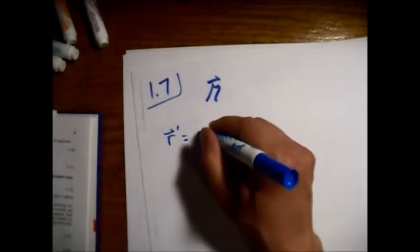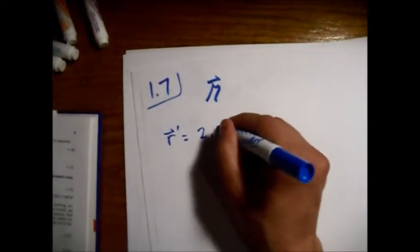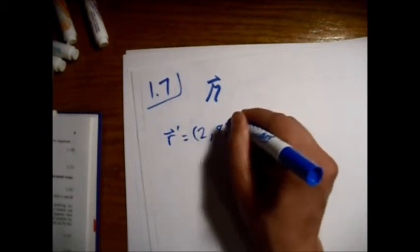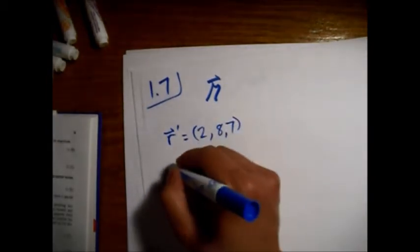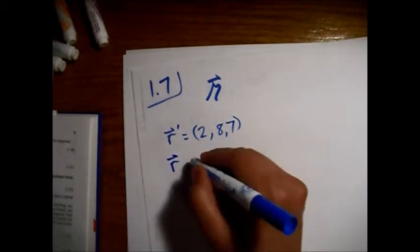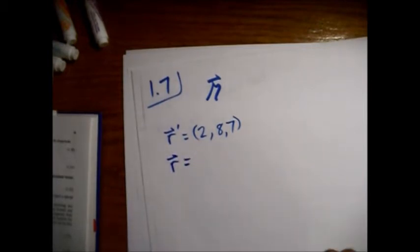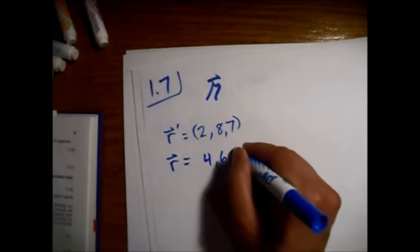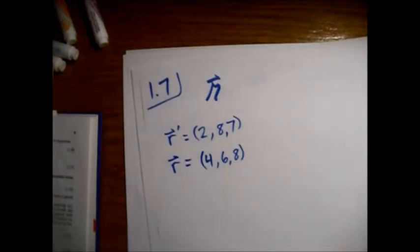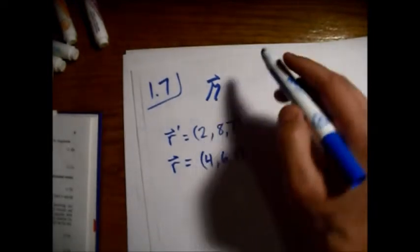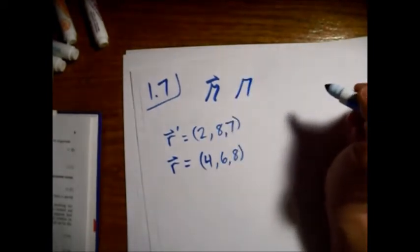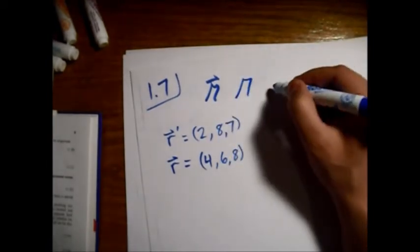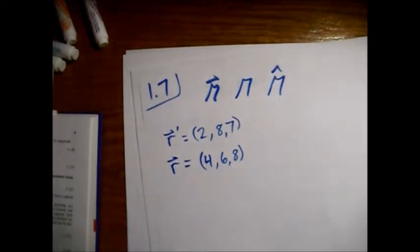The source point of 2, 8, 7, that's the one he gives us, to the field point which he uses R, 4, 6, and 8. So we need to find this, and its magnitude, and also the unit vector.